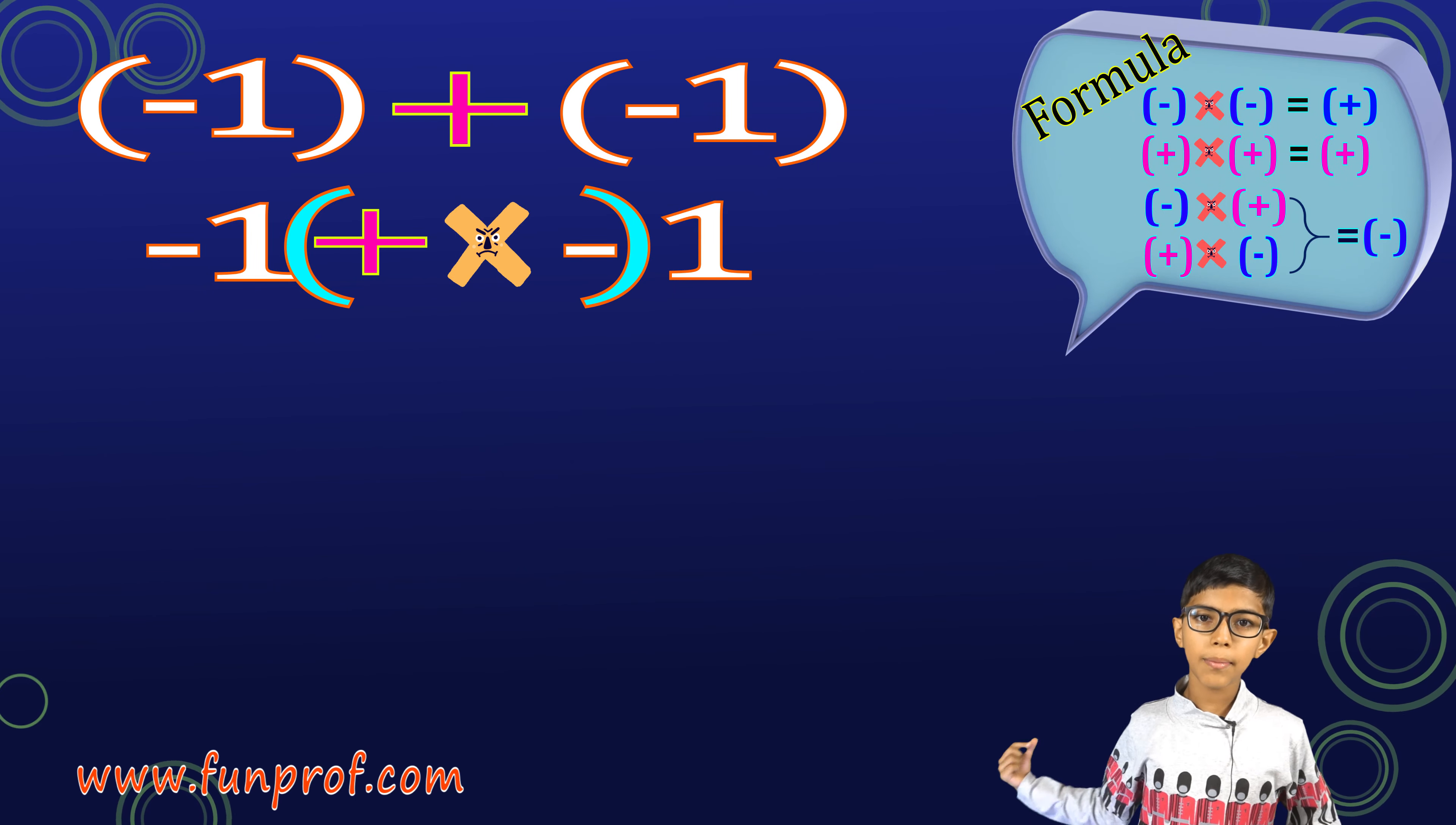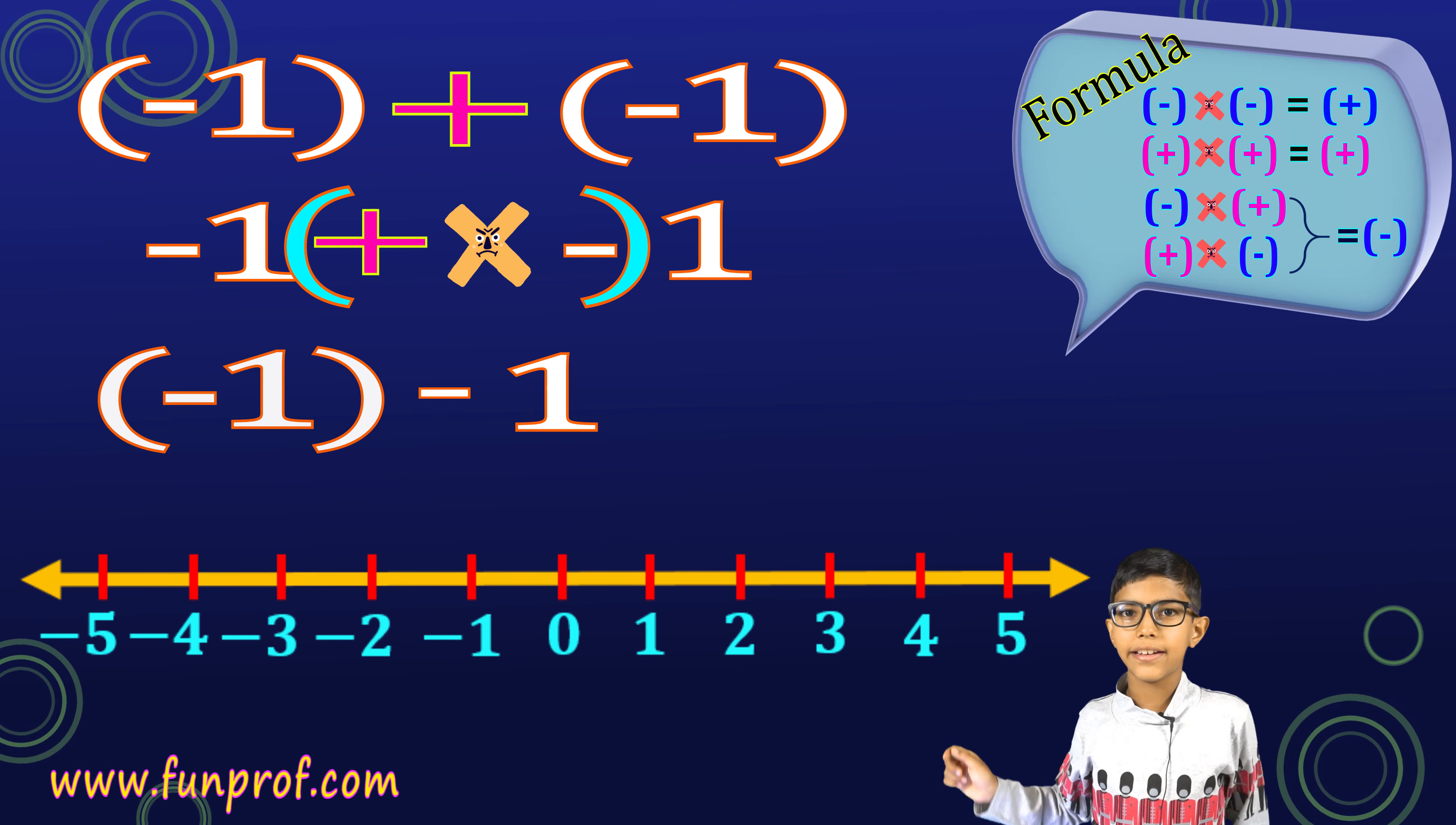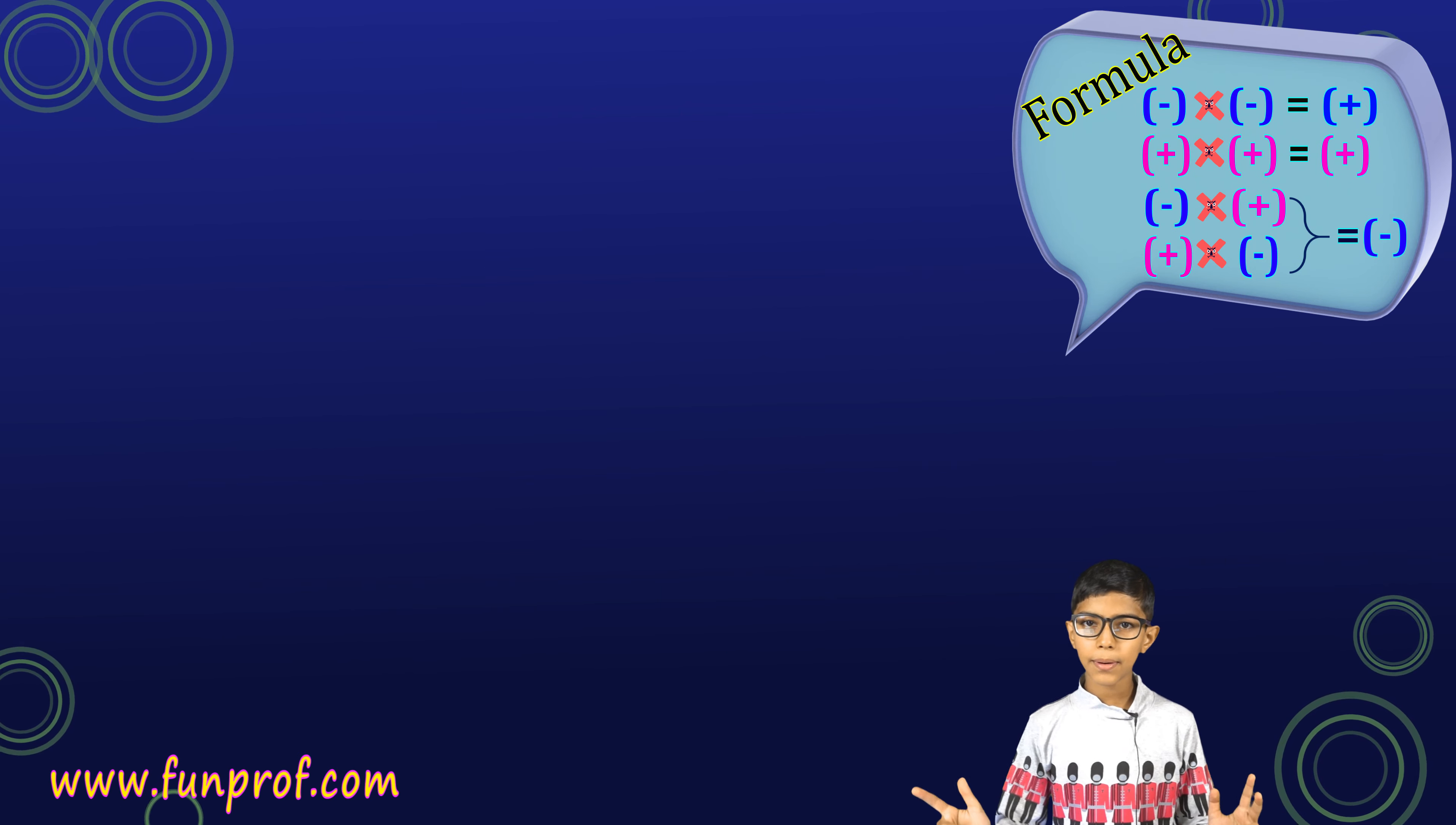Now, for addition, there are different rules. But first, we shall solve this problem. So, this plus and minus make a group and become minus. So, minus 1 minus 1. So, on the number line again, we are on minus 1 and we take one step to the left. We get minus 2. Was this simple?